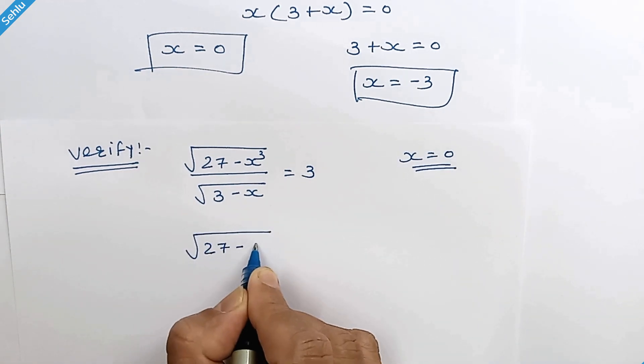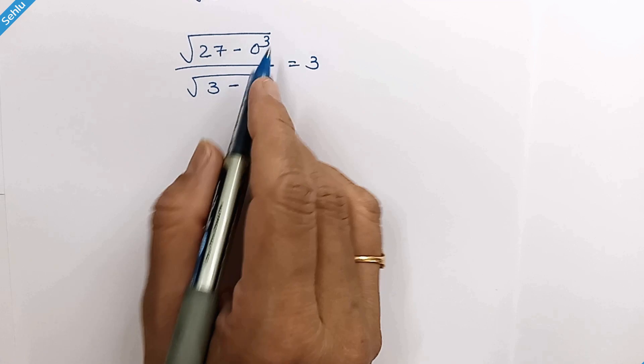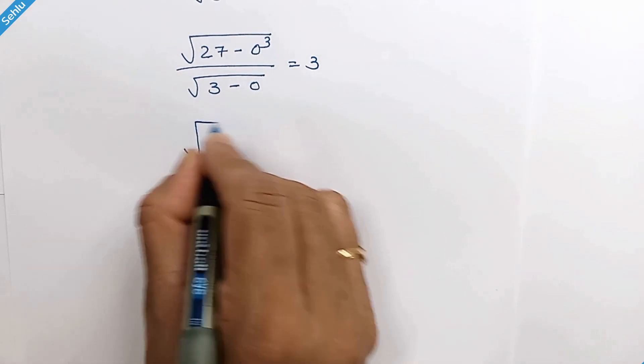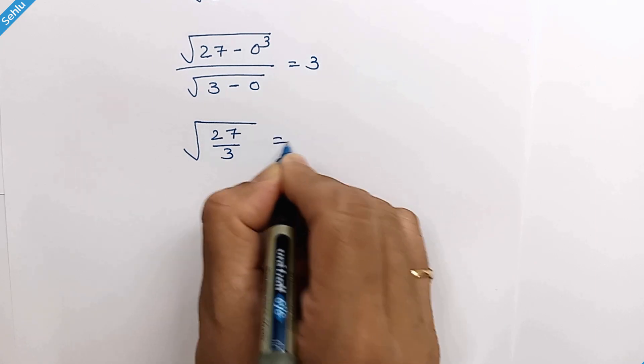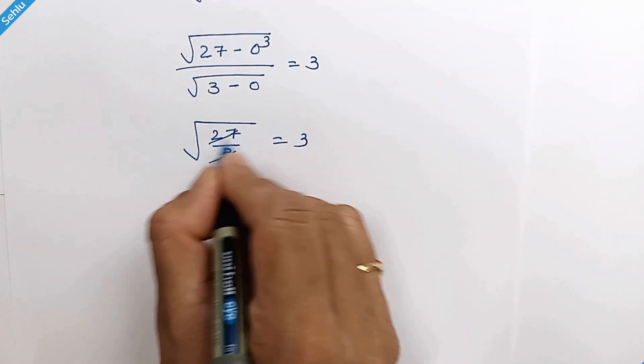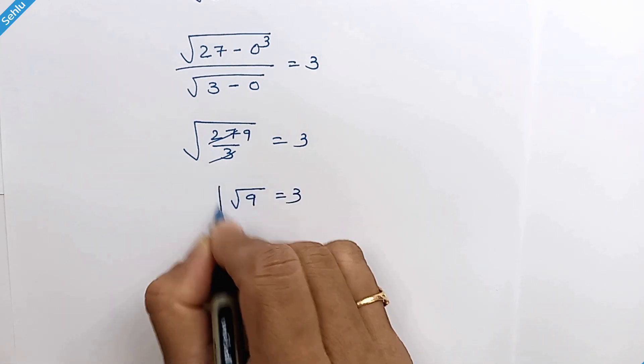27 minus 0 cubed over square root of 3 minus 0 equals 3. 0 cubed is 0, so we have 27 over 3. 3 nines are 27. So square root of 9 equals 3.